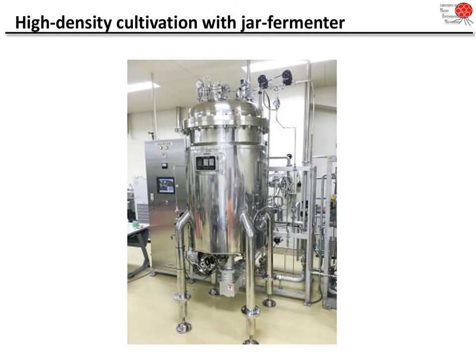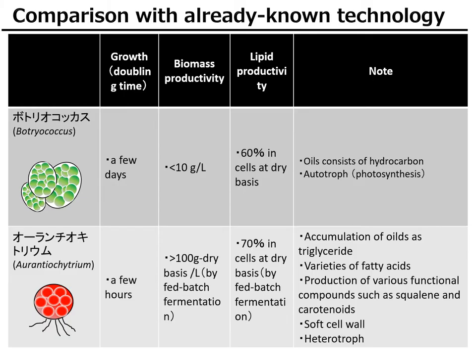To produce heterotrophic microbes including thraustochytrids, companies set up factories and culture them using jar fermenters. In Japan, well-established fermentation technology allows companies to set up facilities for microbial culture. For utilizing thraustochytrids in aquaculture, we first need to culture them and carry out mass production to supply large numbers of cells for the aquaculture industry.